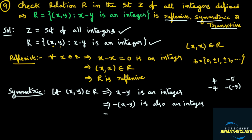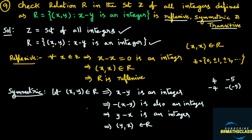Multiplying by minus, minus of (x minus y) becomes y minus x. So y minus x is an integer. From the definition of the relation, if y minus x is an integer, this tells us that the ordered pair (y, x) will be there in the relation. So if we take ordered pair (x, y) in the relation, we find that ordered pair (y, x) is also in the relation. Therefore, the relation R is symmetric.